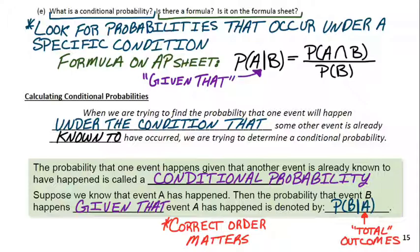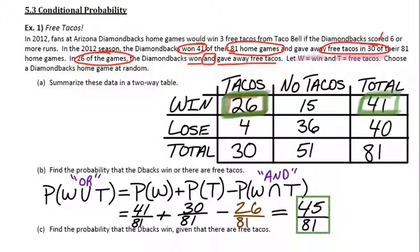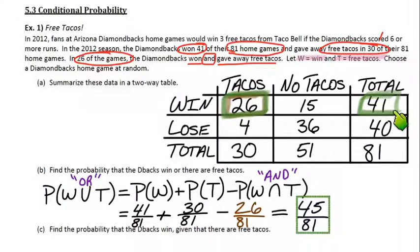The big idea is we're no longer looking at the table total. Revisiting the Diamondbacks example: for conditional probability, we weren't looking at 81 for our total. We were looking at taco games — so 30 was our total — or games that they won — so 41 was our total. Those were our specific conditions used in the denominator for our probability.